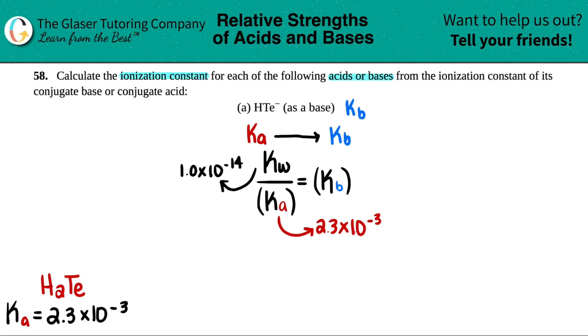So now we have everything we need to solve this equation. So let's get down to it. So something divided by something equals Kb. 1.0 times 10 to the negative 14th divided by 2.3 times 10 to the negative third. And that's equal to Kb.